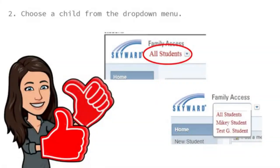Once you are logged in, you can choose a student to view or view all students at the same time. To view students individually, click on the All Students tab and select the student you would like to view. If you only have one student, you can skip this step.